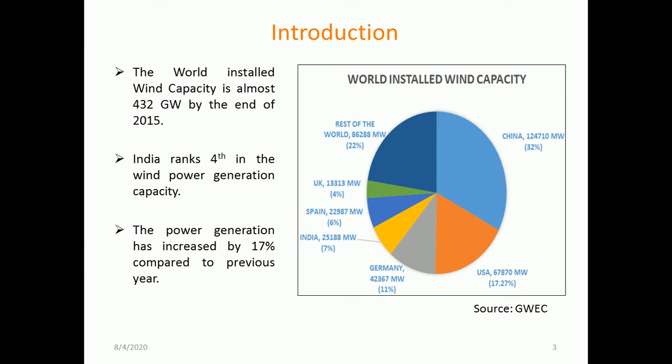Power generation has been increased by almost 17% compared to previous years. From the pie chart from the Global Wind Energy Council, you can observe that countries like the USA, China, and Germany have a very vast potential for wind energy. India ranks fifth in the world, and the installed capacity of wind energy in India is 25,188 MW, which constitutes almost 7% of the installed capacity.